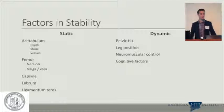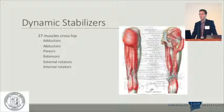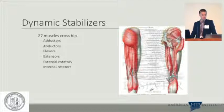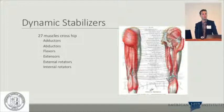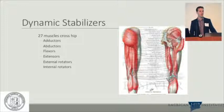As mentioned yesterday, there are 27 muscles across the hip, emphasizing the role for physical therapy and rehab around hip arthroscopy, but also these muscles can make a significant contribution to hip stability.